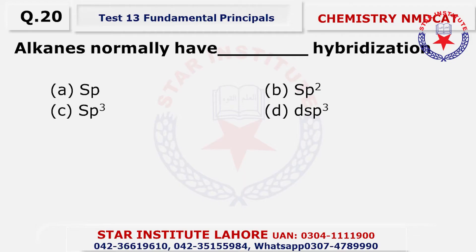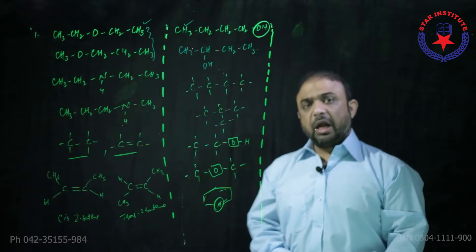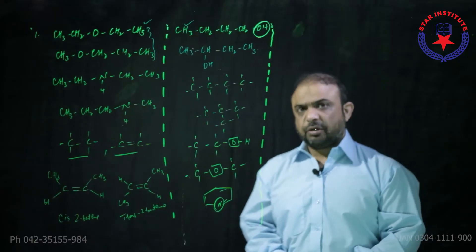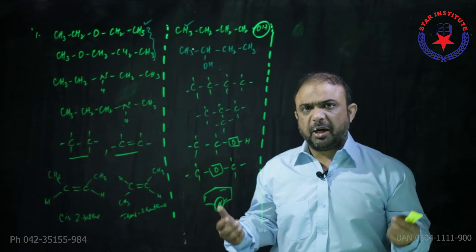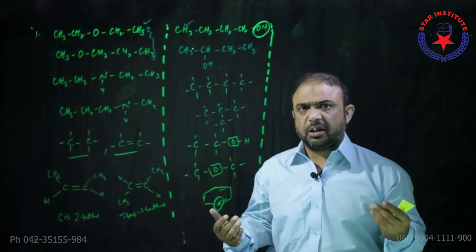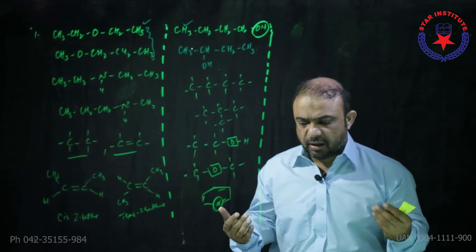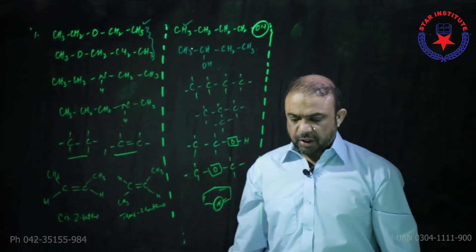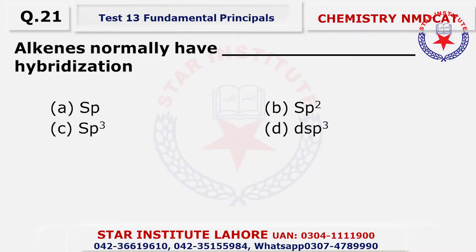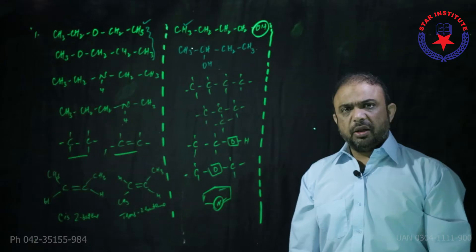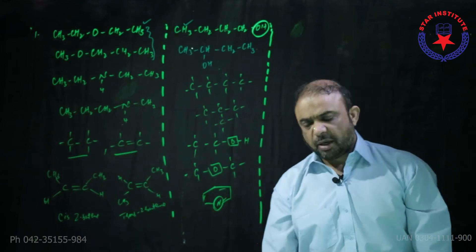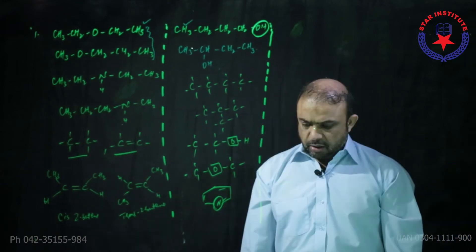Question number twenty: Alkanes normally have — alkanes are saturated compounds, they are SP3 hybridized, have a tetrahedral structure with a 109-degree bond angle. So the choice is C. Question number twenty-one: Alkenes are normally SP2 hybridized, with bond angles of 120 degrees — and these are always associated with doubly bonded compounds.